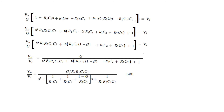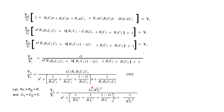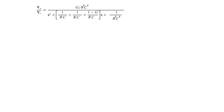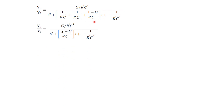Dividing everything by R1·R2·C1·C2, we get V0/V_in = G/(R1·R2·C1·C2) divided by S² + S·[1/(R2·C2) + 1/(R1·C1)(1−G) + 1/(R1·C2)] + 1/(R1·R2·C1·C2). This is the final form. We can simplify further by assuming R1 = R2 = R and C1 = C2 = C, which reduces the S coefficient to (3 − G)/RC.